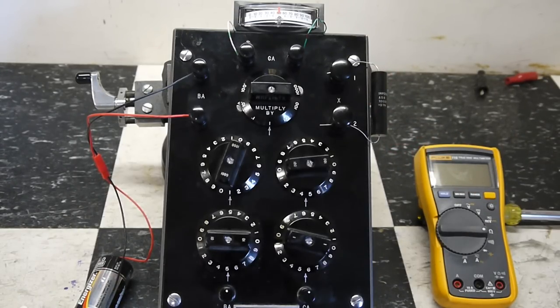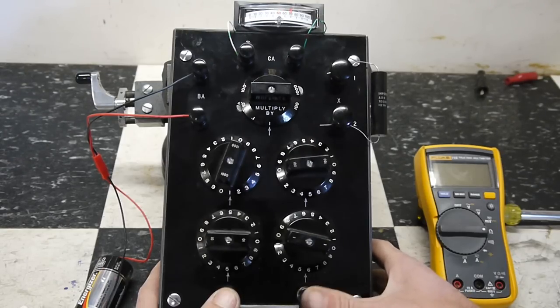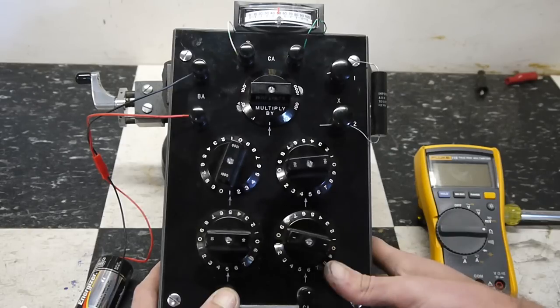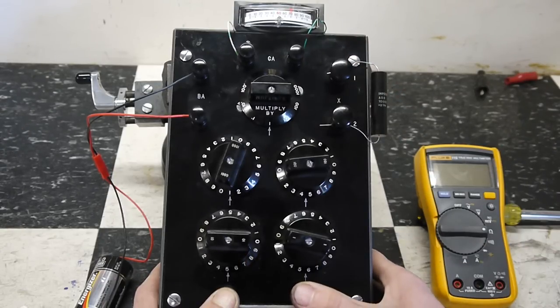So, to find our unknown resistance, you essentially just pick a random number. It doesn't really matter where you start. And you press the battery and galvo buttons. And you can see the galvo moving.